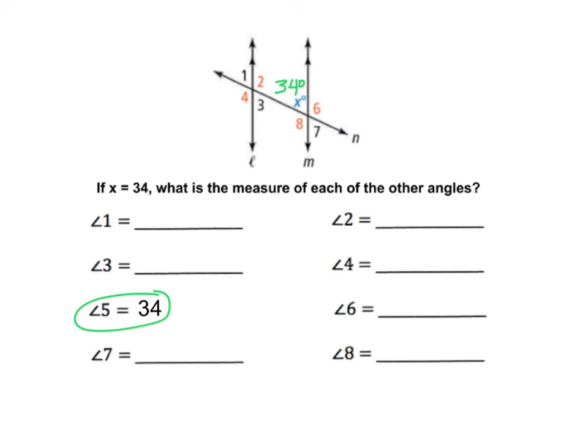I'm going to start with angle 7 because I know that angle 7 is vertical with that 34 degrees. And vertical angles are always congruent to each other. So angle 7 would also be 34 degrees. I would recommend that you draw the diagram out in your notes so you can mark it up and put the angle measurements down, like I'm doing here.